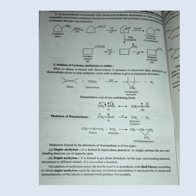Addition of carbenes to alkenes. When an alkene is treated with diazomethane in the presence of ultraviolet light, photolysis of diazomethane occurs to form methylene, which adds to the alkene to give a cyclopropane derivative.